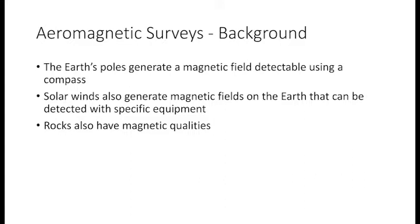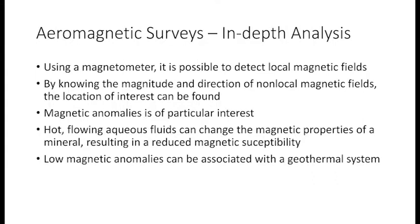Rocks can also have magnetic qualities, especially if they contain iron compounds. An aeromagnetic survey uses a magnetometer, and what it does is make it possible to detect local magnetic fields that are weaker than the magnetic field produced by the Earth's poles.